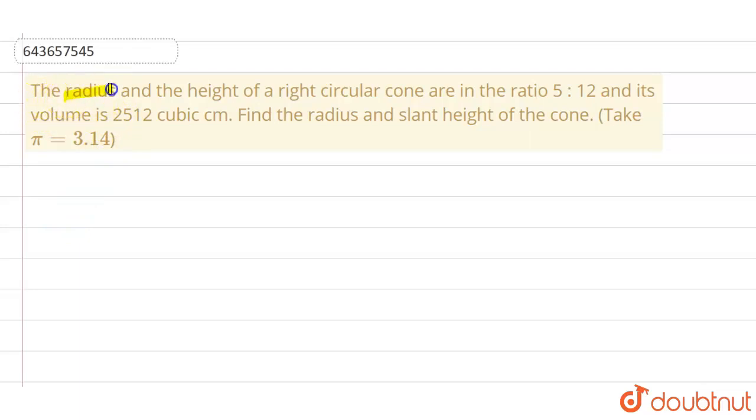The radius and the height of a right circular cone are in the ratio 5 is to 12, and its